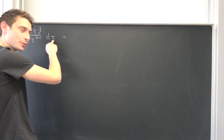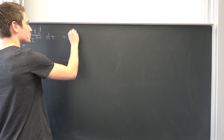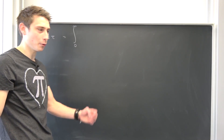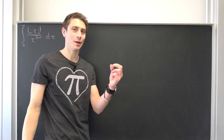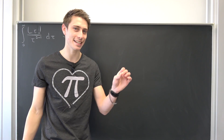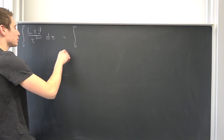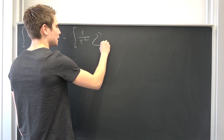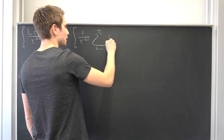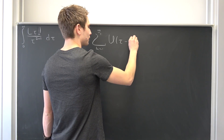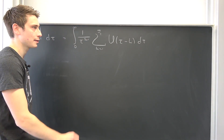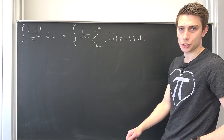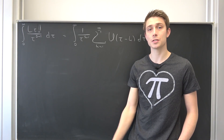Let's rewrite this. I'll use tau as nothing but an integral from 0 to infinity. You might wonder why we have s to the power of s plus 1 — well, whenever there's an s, there's going to be a theta function. So: integral from 0 to infinity of 1 over tau to the s plus 1 power, times the sum running from k equals 1 to infinity of the unit step function of tau minus k, d tau.